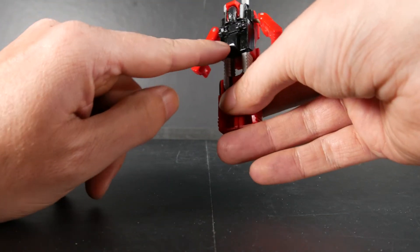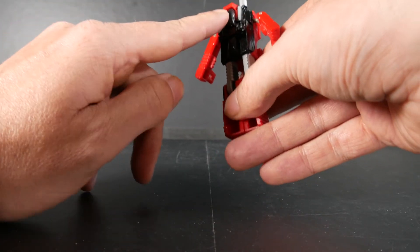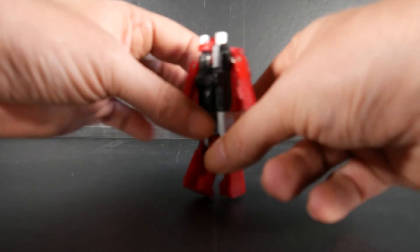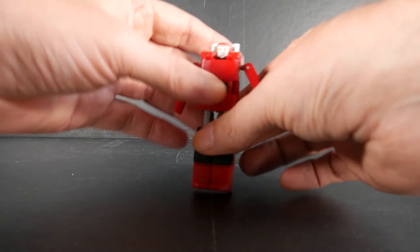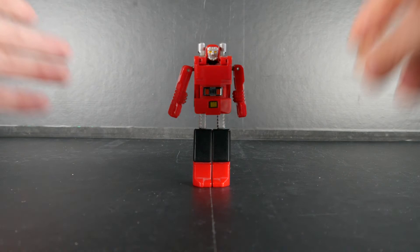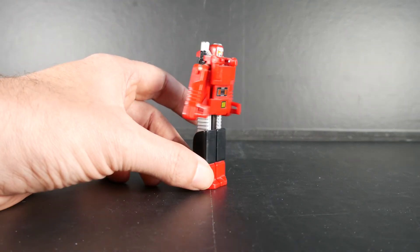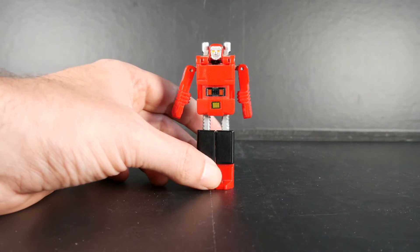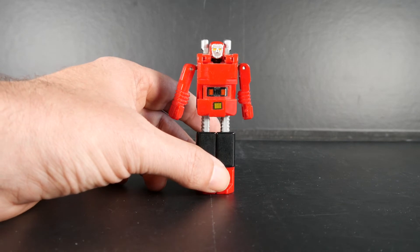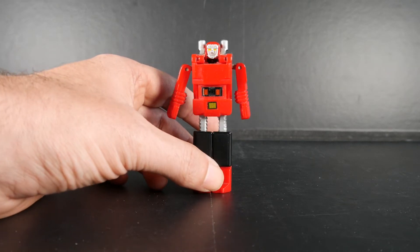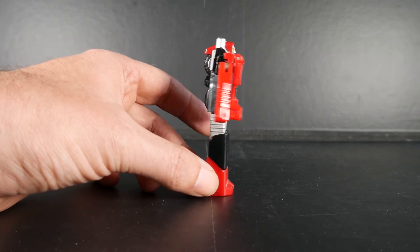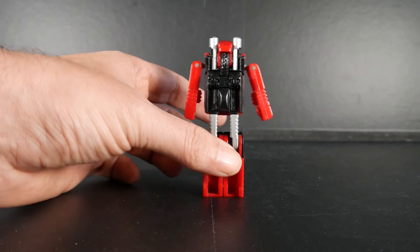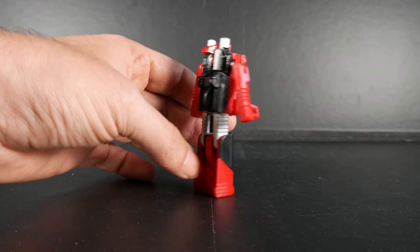Alors ce que je n'ai pas précisé en mode scooter, il y a une fausse roue à l'arrière, une vraie roue à l'avant qui tourne. Alors du coup il roule pas bien. Mais bon voilà notre scooter en mode robot. Alors là pour le coup voilà c'est très fidèle à l'animé. On reconnaît bien voilà tout scooter.